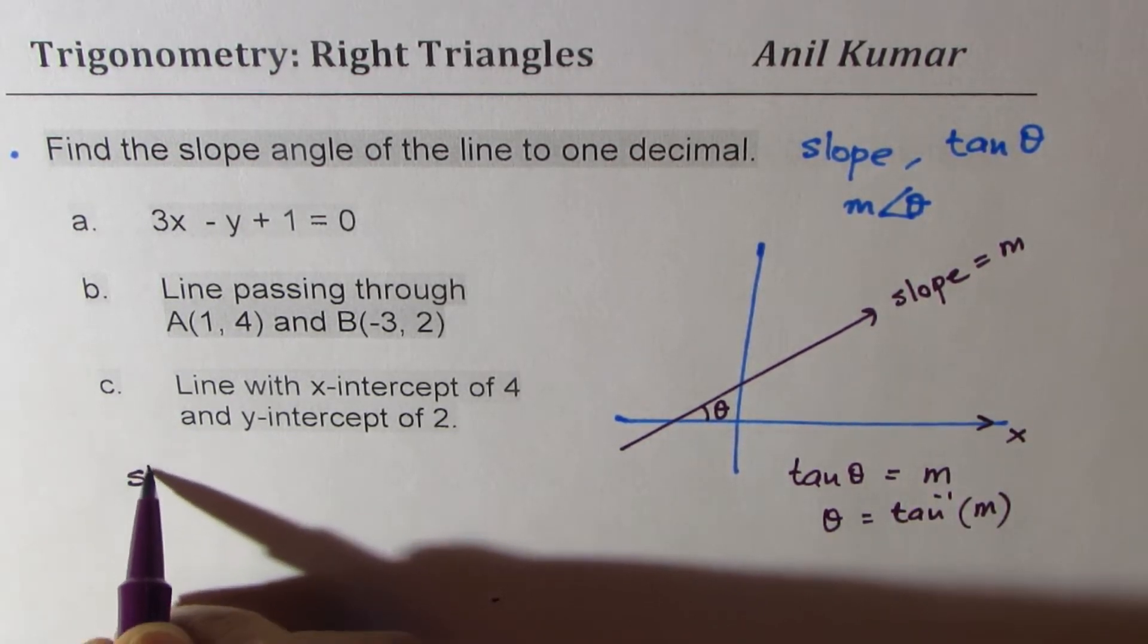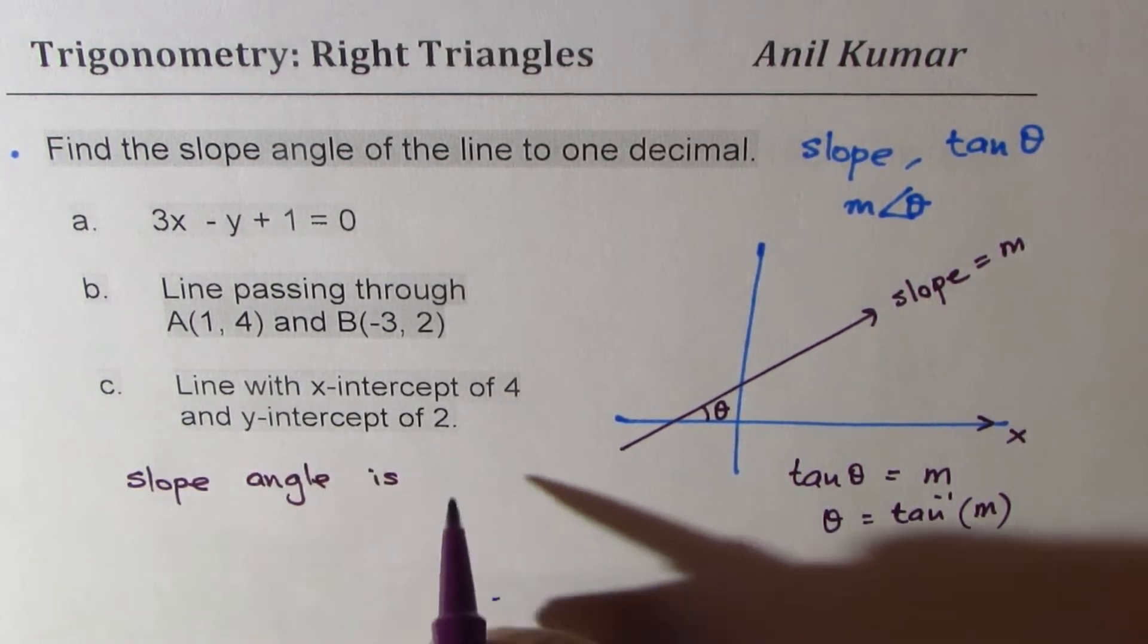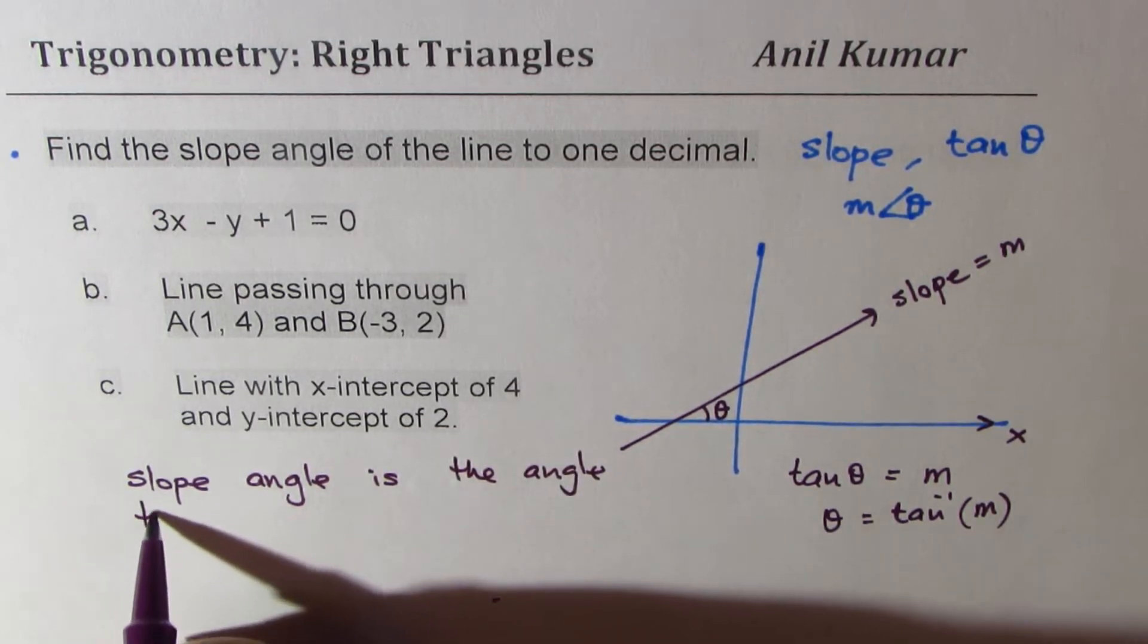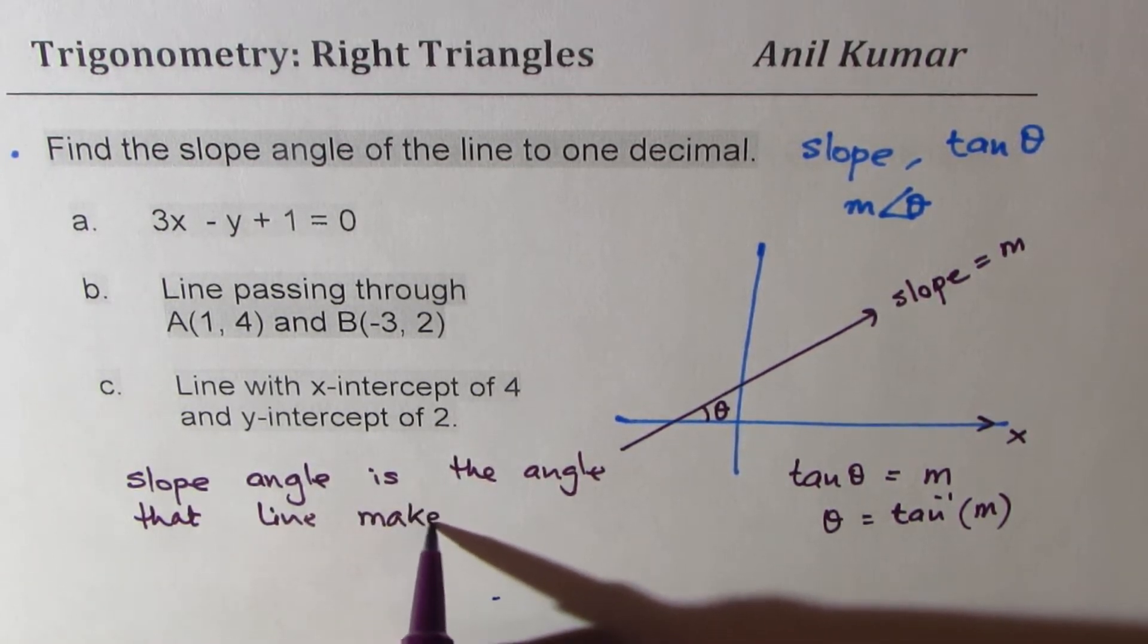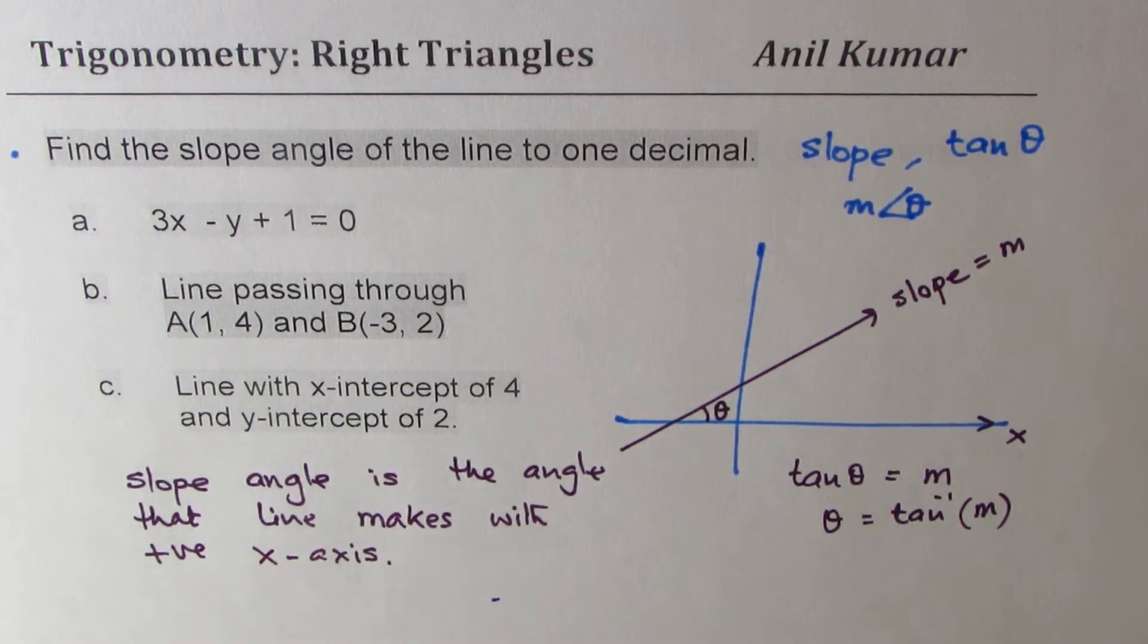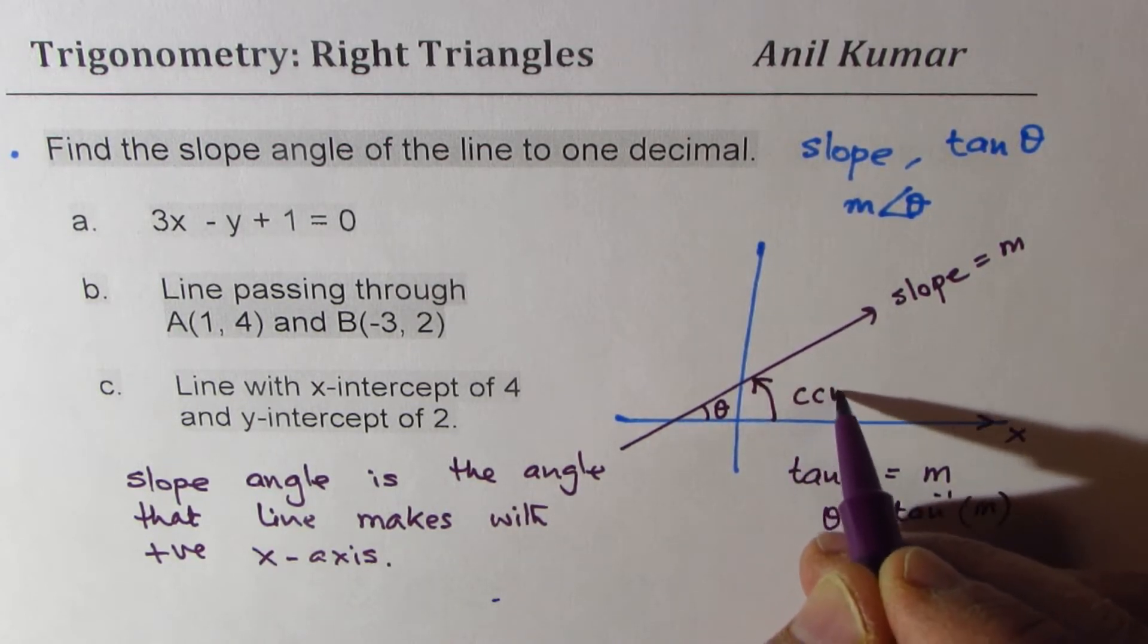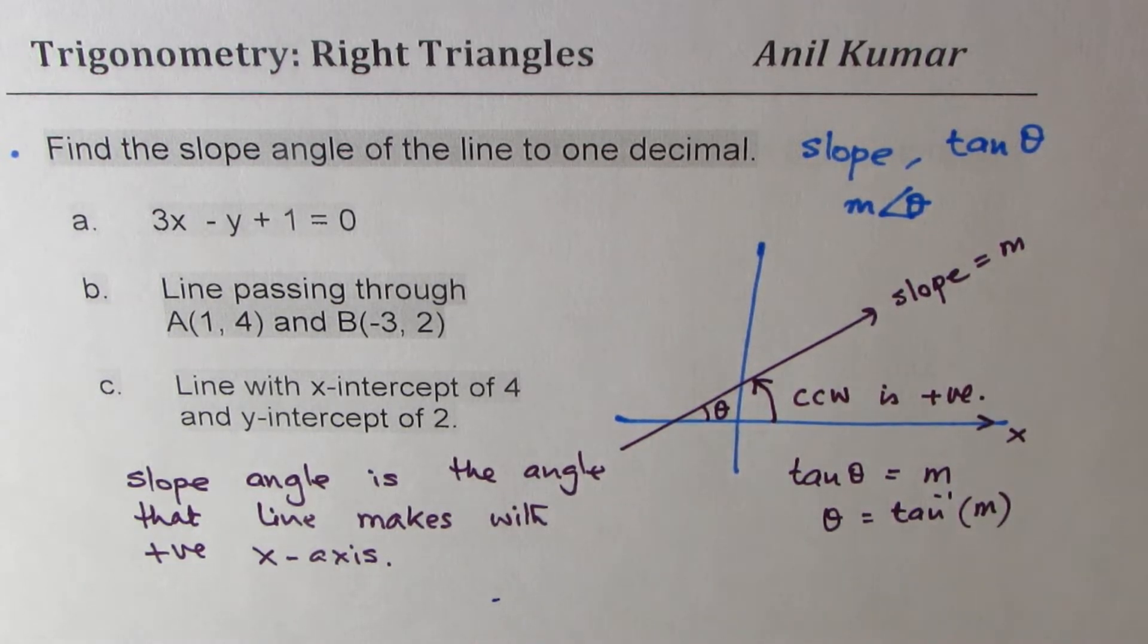Let me write down that slope angle is the angle that the line makes with the positive x-axis. And always measured counterclockwise is positive. So remember this to answer these questions.